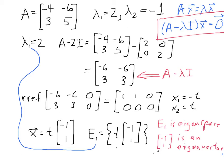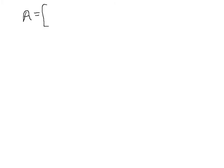Our other eigenvalue is negative 1. Let's go to another page. You should try to use the same process to find the eigenspace for the eigenvalue of negative 1. Remember our matrix A was negative 4, negative 6, 3, 5, and we're now working with the second eigenvalue, negative 1. Pause the video and try to find the eigenspace corresponding to this eigenvalue, then resume once you have your answer or are stuck.